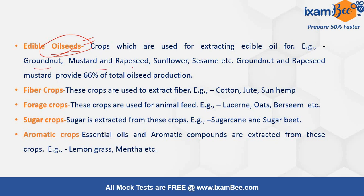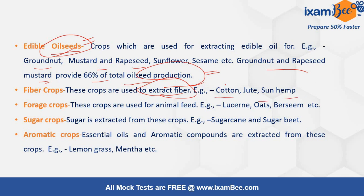Oilseed crops include groundnut, mustard, and rapeseed, which together provide 66% of the total oilseed production in India. These are the oilseed crops grown for their oil. Fiber crops are generally for extracting fiber — like cotton, jute, and hemp.